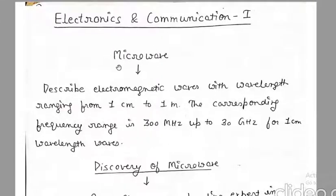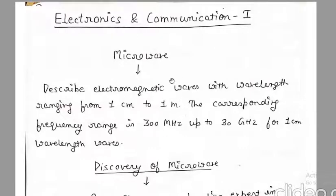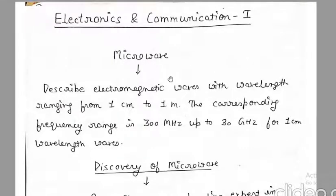What is a microwave? Microwave describes the electromagnetic wave with wavelength ranging from 1 cm to 1 m. The corresponding frequency range is 300 MHz up to 30 GHz for 1 cm wavelength waves. Here we have talked about the definition of microwave.